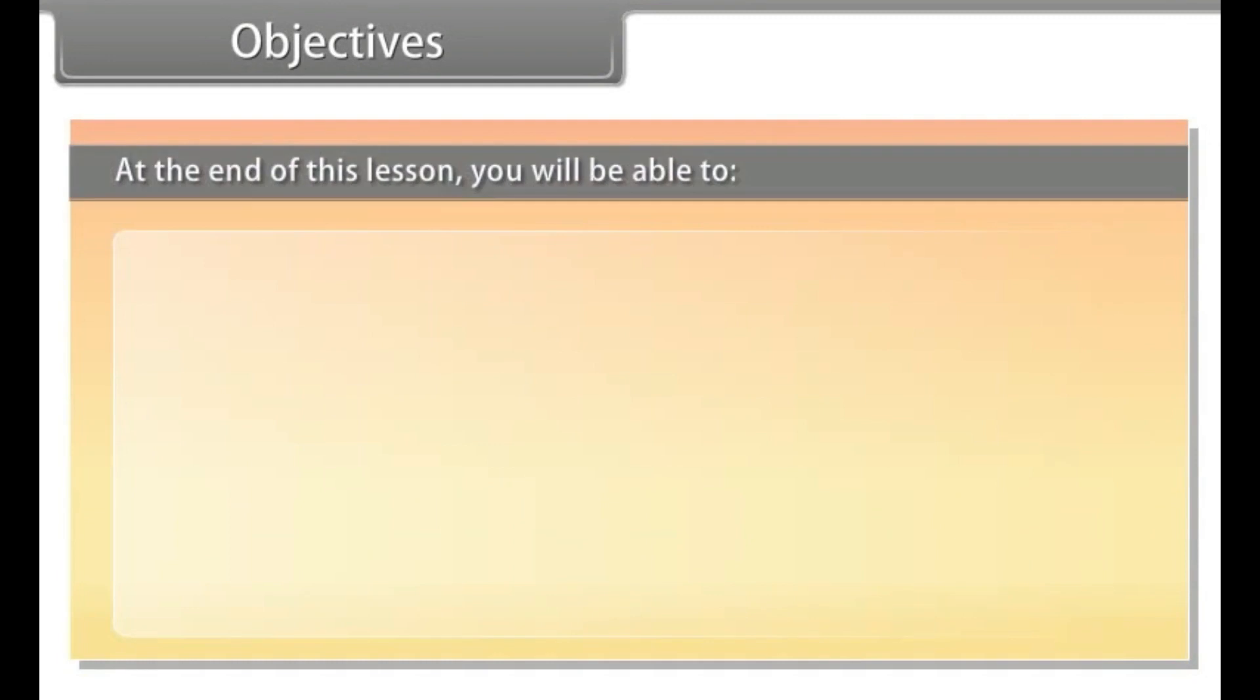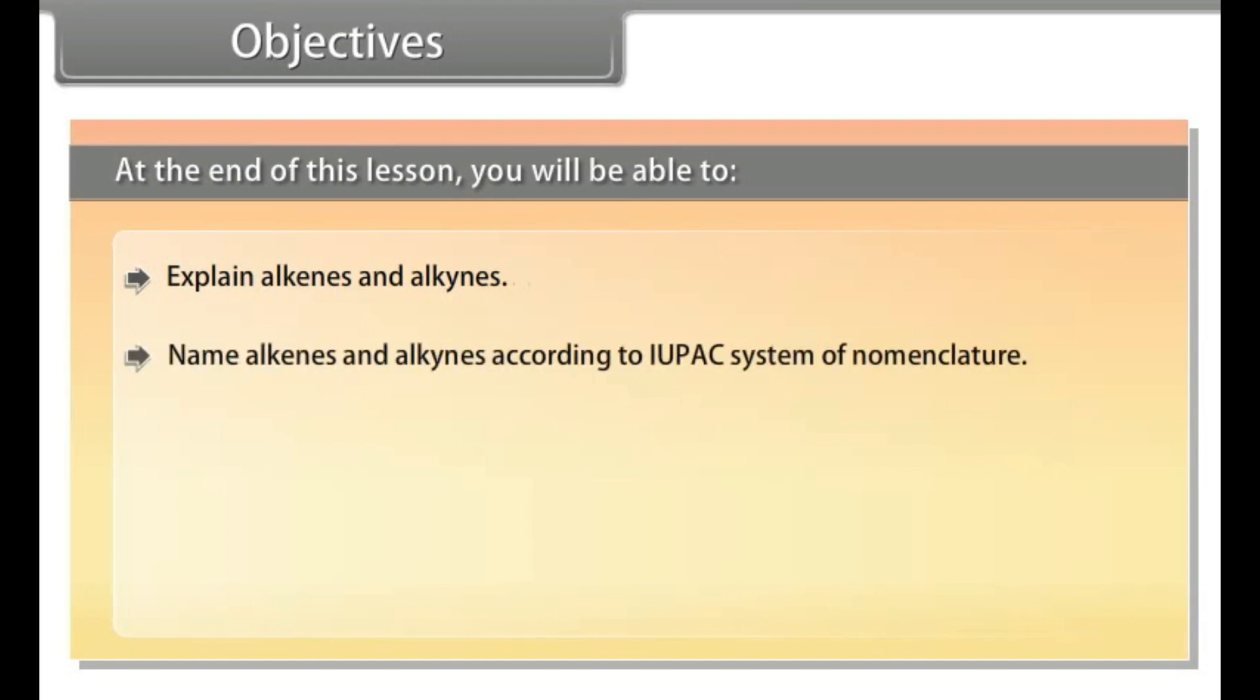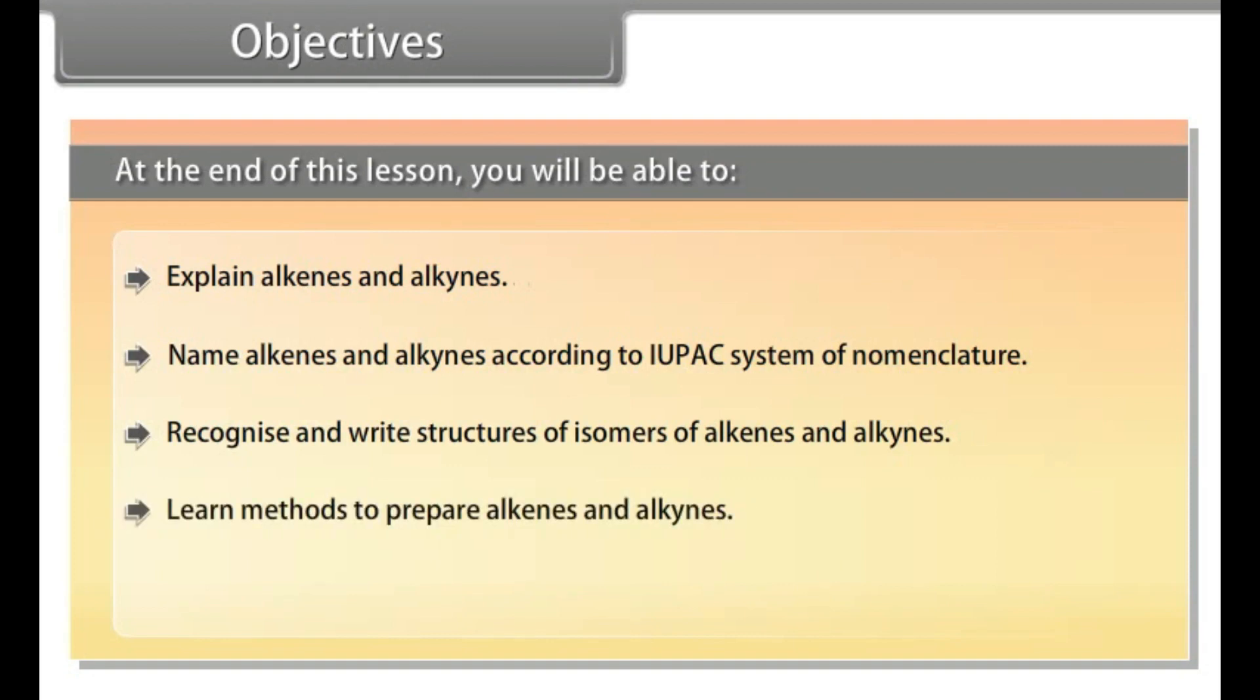At the end of this lesson, you will be able to explain alkenes and alkynes, name alkenes and alkynes according to IUPAC system of nomenclature, recognize and write structures of isomers of alkenes and alkynes, learn methods to prepare alkenes and alkynes, and write the physical and chemical properties of alkenes and alkynes.